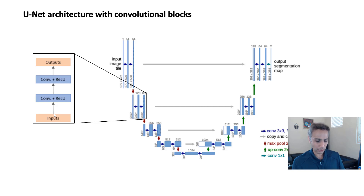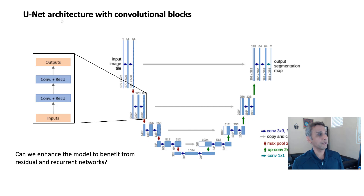Now the question is: can we enhance this model — the standard U-Net — to benefit from residual and recurrent networks? And of course the answer is yes. Let's see why.